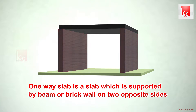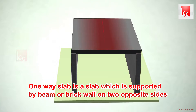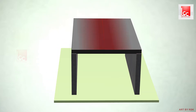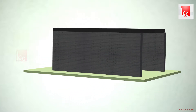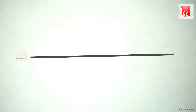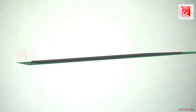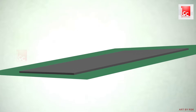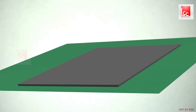In a one-way slab, the ratio of longer span to shorter span is equal to or greater than two — that is, longer span A divided by shorter span B is greater than or equal to two.